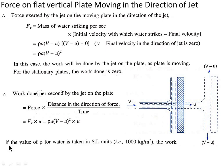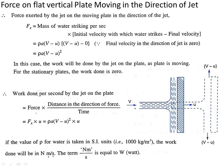If the value of rho for water is taken in SI units as 1000 kg per cubic meter, work done will be in newton-meter per second, which equals watts. Now next is the force on an inclined plate moving in the direction of jet, where the plate is inclined at angle theta.